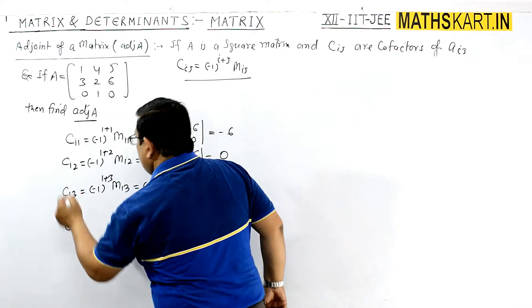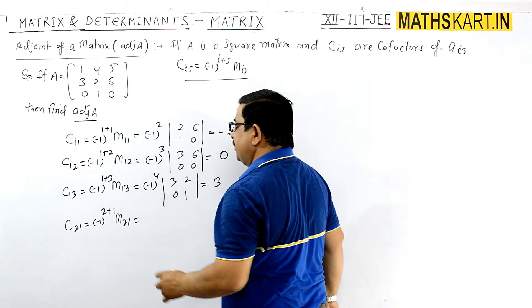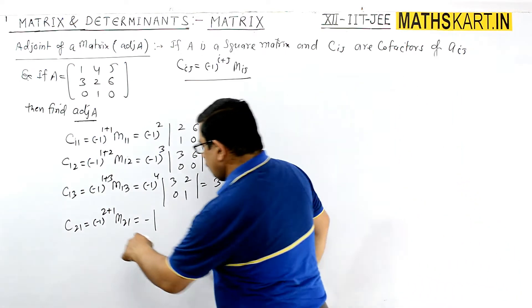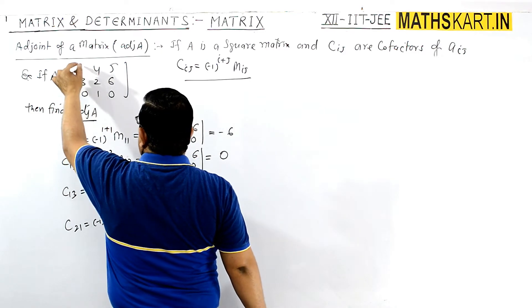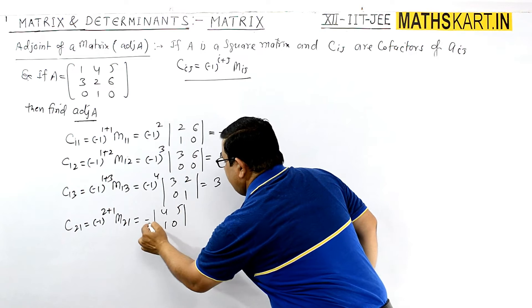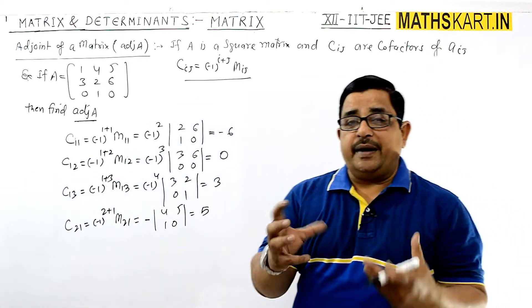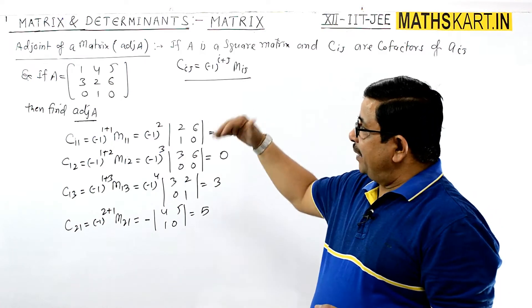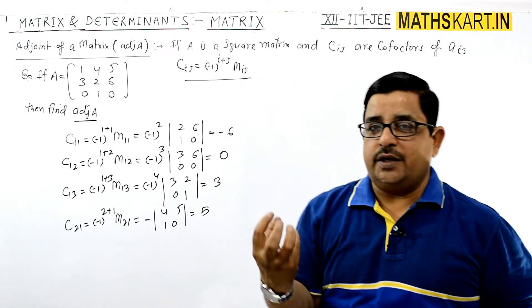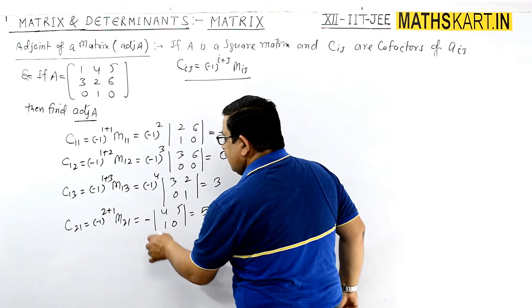Now come to the second row. C_21 = (-1)^(2+1) × M_21 = (-1)^3 × M_21, which is negative. For M_21, remove that row and column, leaving |4,5; 1,0| = 0 − 5 = −5. Multiplying by −1 gives C_21 = 5. The minor is the determinant obtained from the matrix by deleting the row and column of the corresponding element.